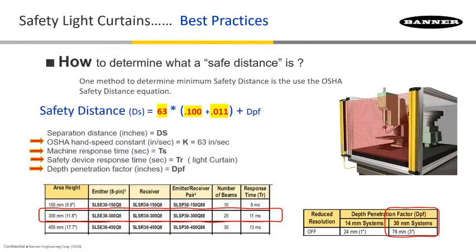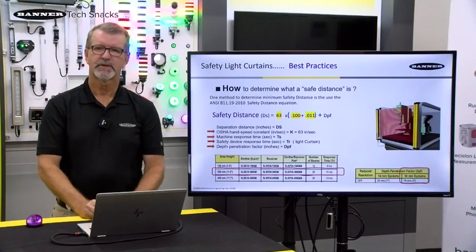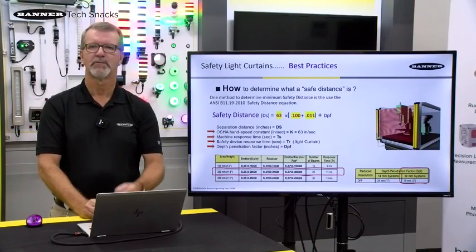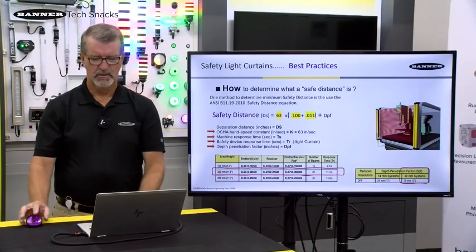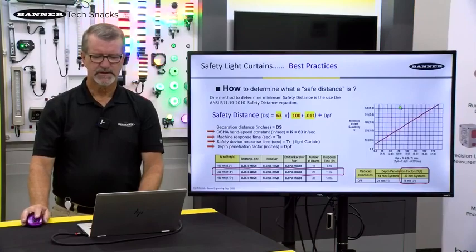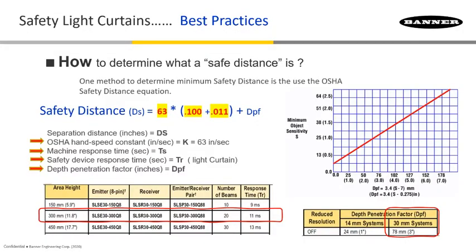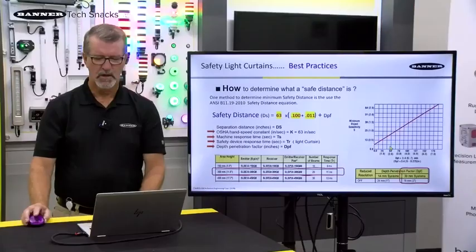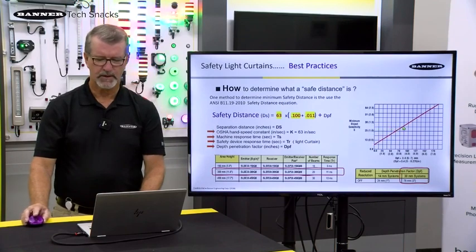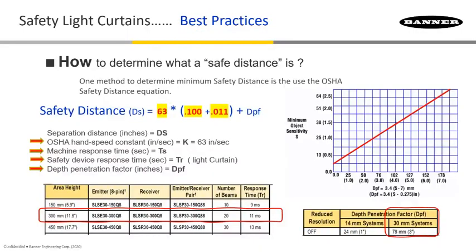For the 30-millimeter model we're talking about, the Depth Penetration Factor has been known to be 3 inches. That value is derived from the formula on the chart shown here — where right at about 30 millimeters, if we bring that across, that's pretty close to 3 inches DPF. So that's going to complete the formula. The total comes out to 10 inches for this setup using the DPF.